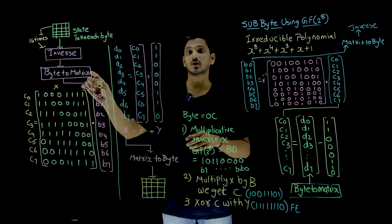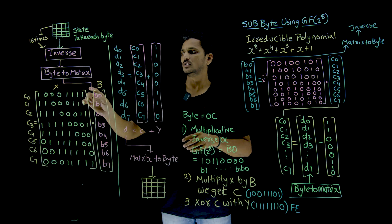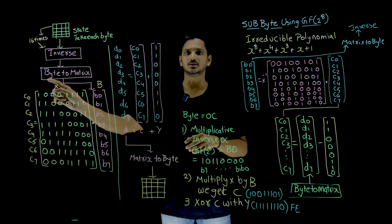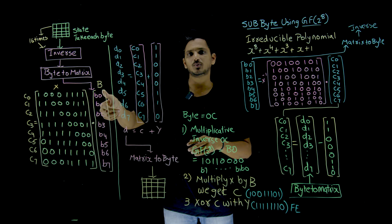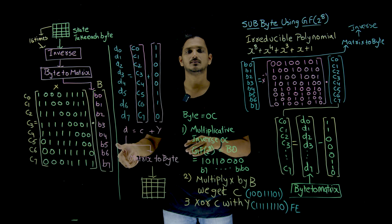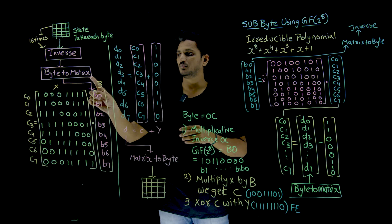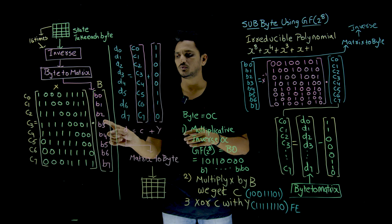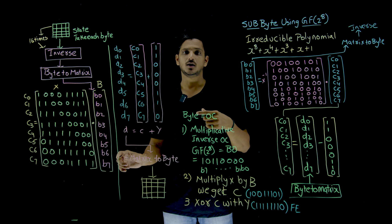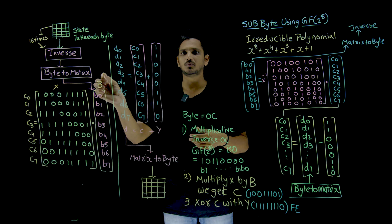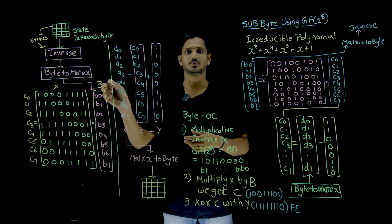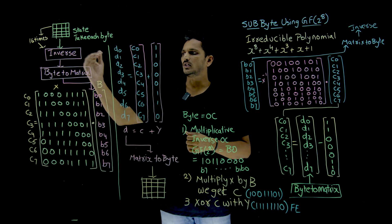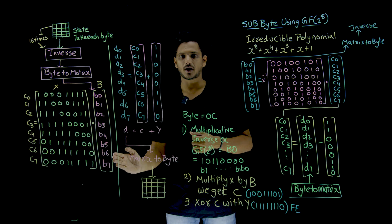That inverse byte is converted to matrix form. You got a byte here — B0, B1, B2, B3, so on up to B7. This byte will be transformed to a column matrix. The point you need to understand here: B0, B1, B2 should be at the top — B0, B1, B2, so on up to B7, this is how you have to write. Many people in confusion write B7 at the top — no, from the top it is B0, B1, B2, up to B7. Once you find the inverse, this inverse is converted to a column matrix.